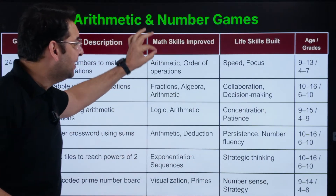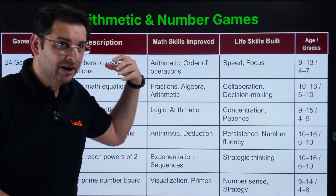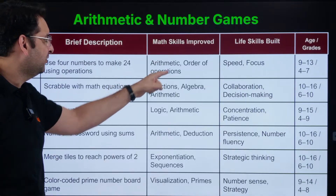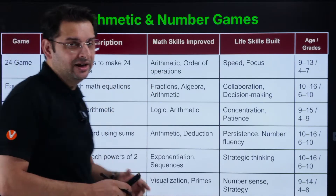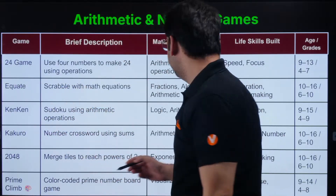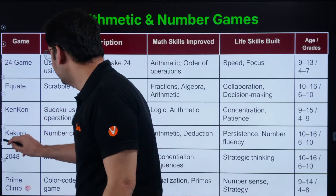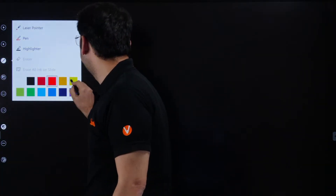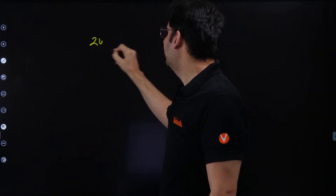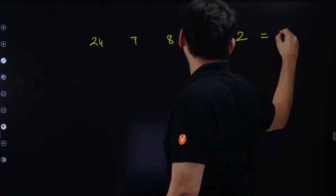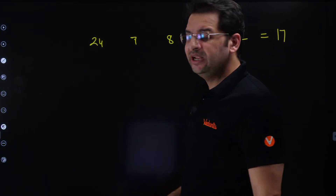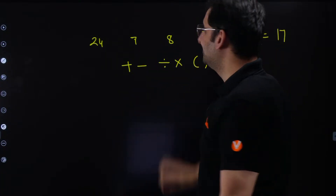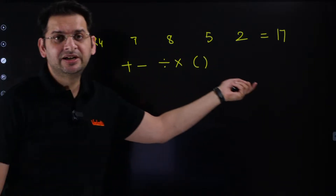Most of these games build arithmetic — they help students develop faster arithmetic and algebra skills. You can see the age limits: 24 game covers arithmetic and order of operations. A simple version of Equate works like this: for example, given 24, 7, 8, 5, 2 equals 7 or 70 — using plus, minus, multiplication, division, and brackets, equate it to 70. This is one version of Equate: a situation is given on the left-hand side and using some or all of these operators you have to equate it to 70.